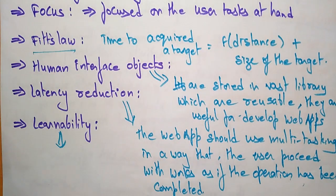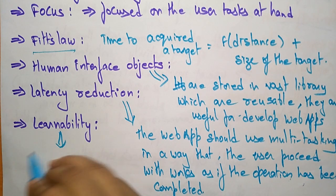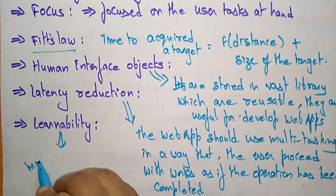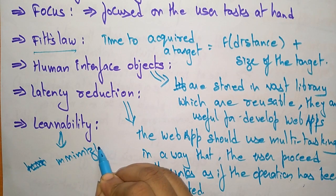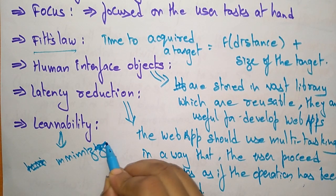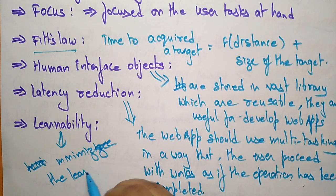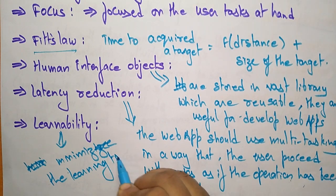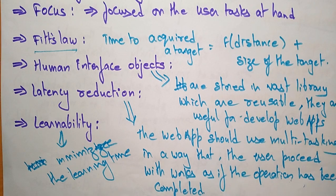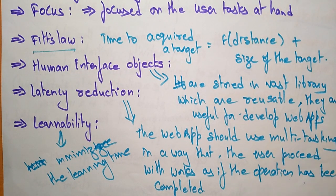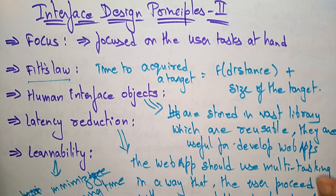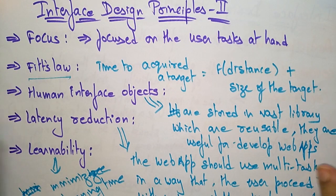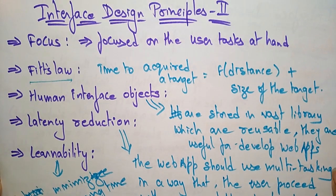The final principle is learnability. A web app interface should be designed to minimize the learning time. If you minimize the learning time to develop a web app interface, then you can achieve learnability. This covers interface design principles 2: focus, Fitts' Law, human interface objects, latency reduction, and learnability. Thank you.